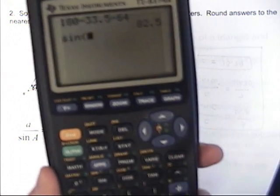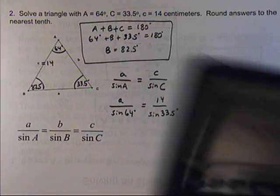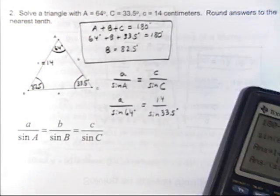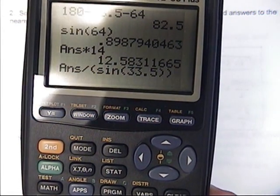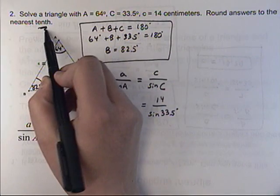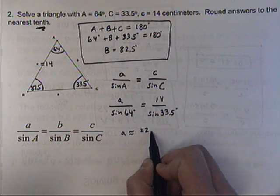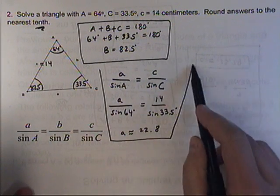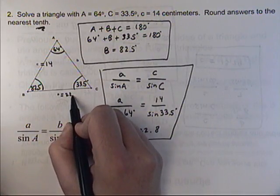Then that would be the sine of 64 degrees times 14, divided by the sine of 33.5 degrees. I enter that key sequence and I get 22.79. They want us to round to the nearest tenth, so side A is approximately 22.8 centimeters. I like to label everything once I find it, so A is about 22.8.